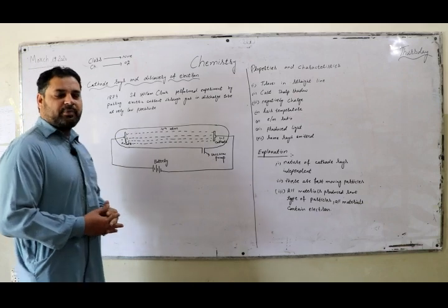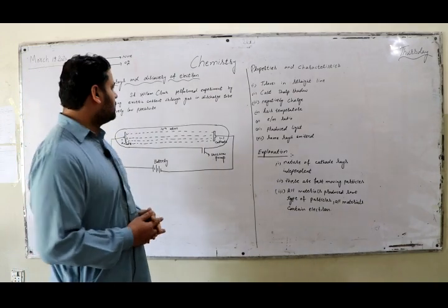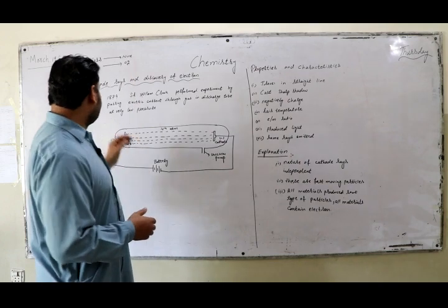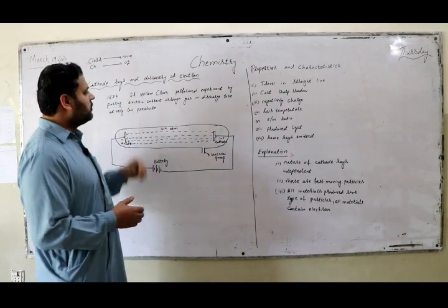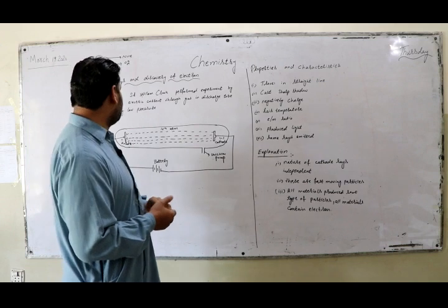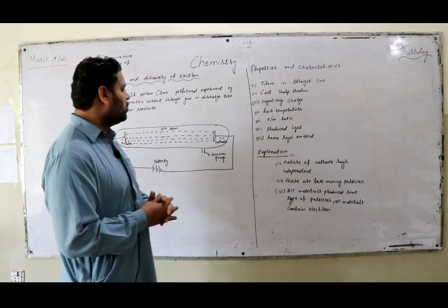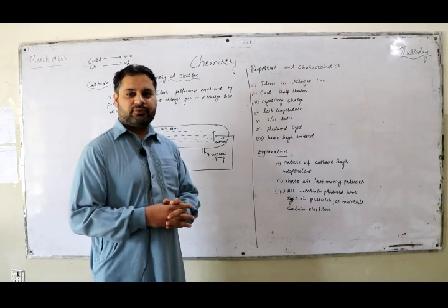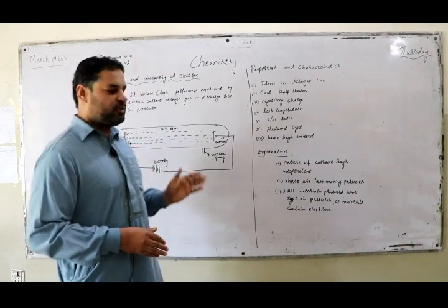Actually, a lot of experiments were performed to discover the electron, but in 1879 Sir William Crookes performed an experiment by passing electric current through gas in the discharge tube. First of all, we look at the experiment.